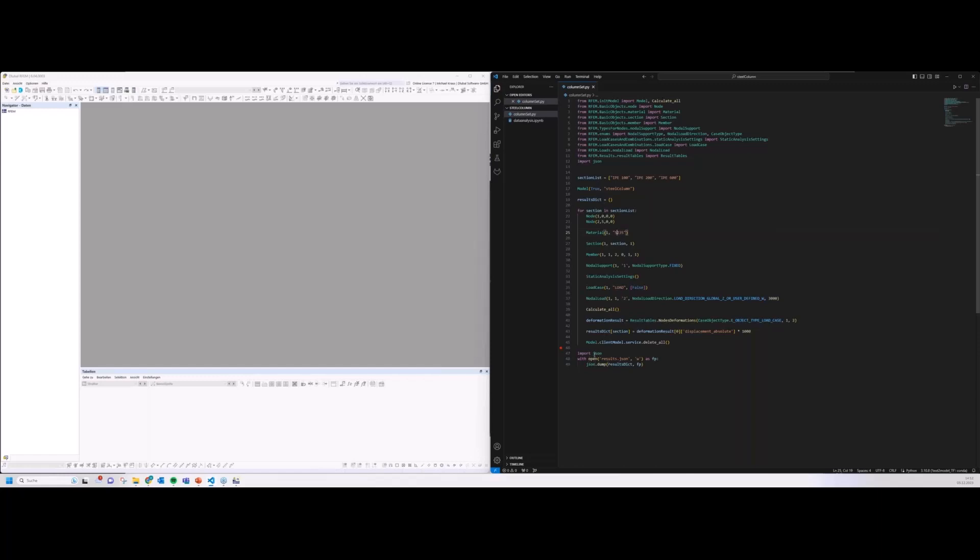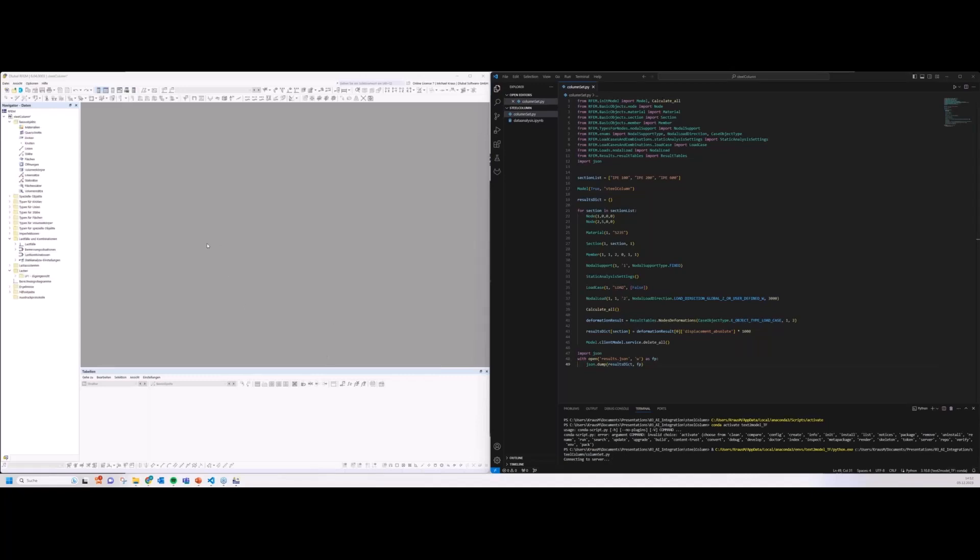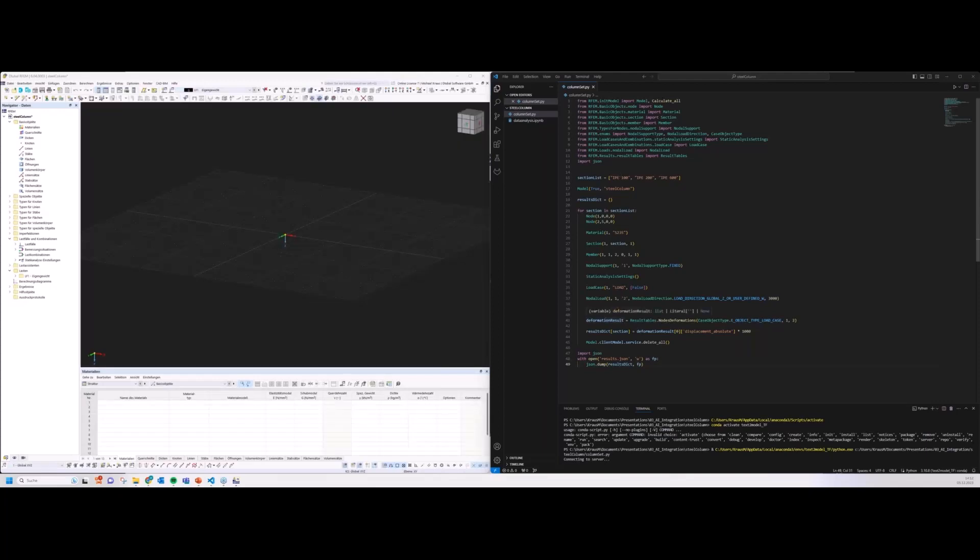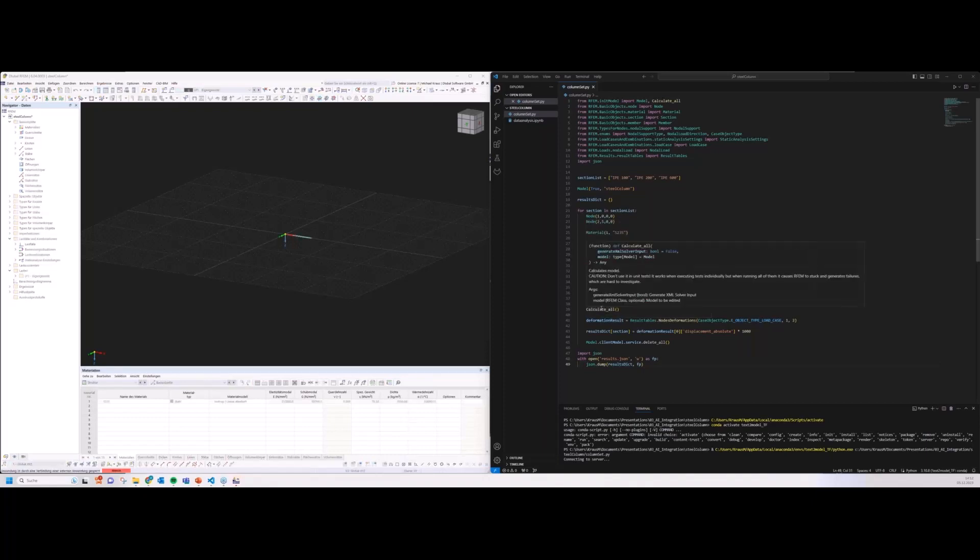Then we execute the computation and save the results from the RFEM computation, delete the model and go into the next counter. Having done this for loop, we collect the results and dump it into a JSON. I will start that script. You see here, it connects to the web service server. It should now start to modify a model here. Yes, it works. Very good. It will take the first section from that list, create the model, apply the loads, do the computation, and save the results.